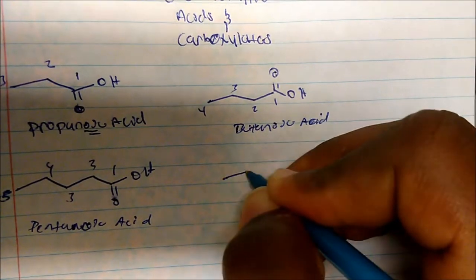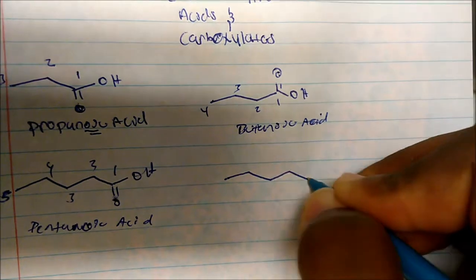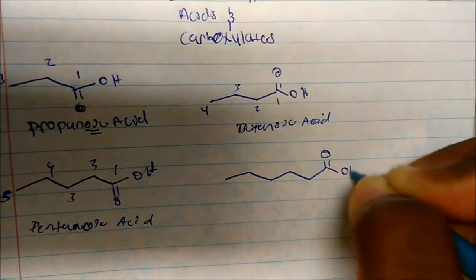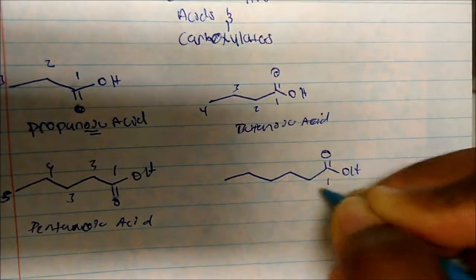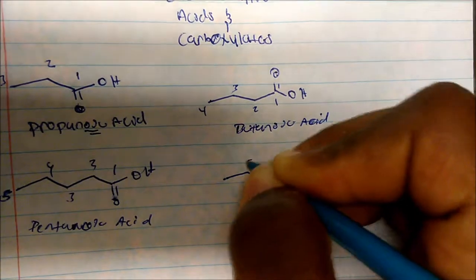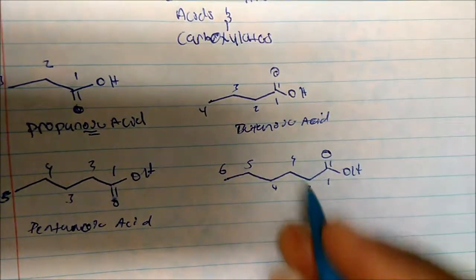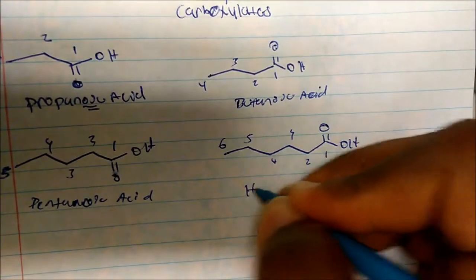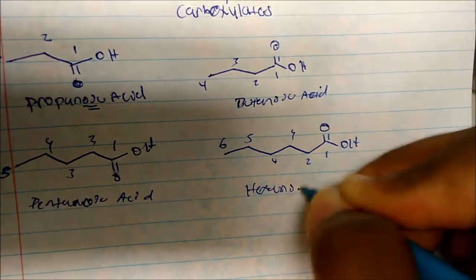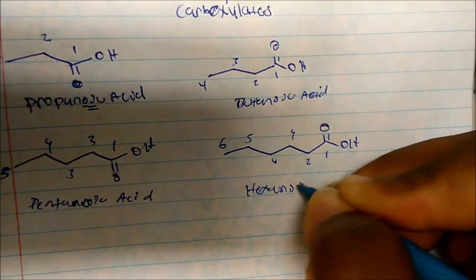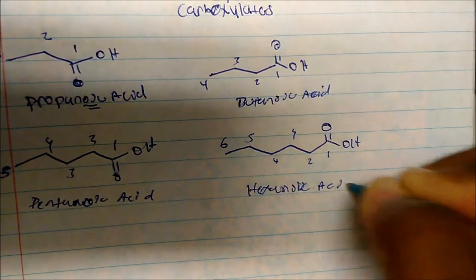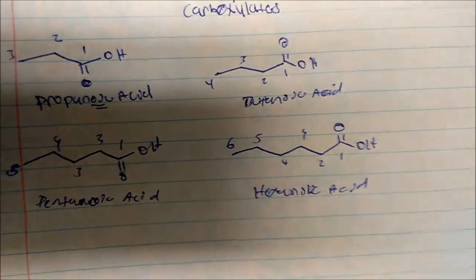What about this one? We have carbons 1, 2, 3, 4, 5, 6 — so you can guess this is hexanoic acid. So you get the general pattern.